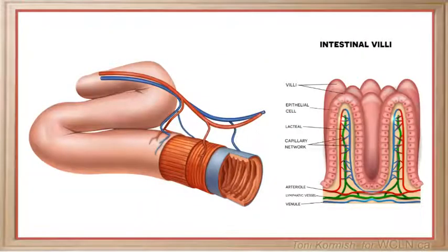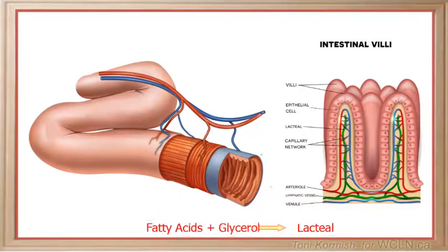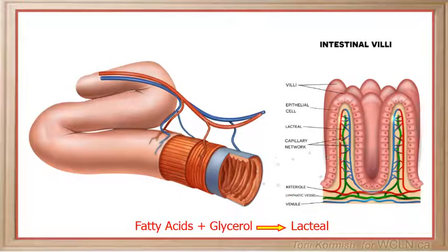The fatty acids and glycerol molecules are small enough to be absorbed into the lacteals of the microvilli that line the walls of the small intestine. The lacteals are part of the lymphatic system, and the products of lipid digestion will be transported through the lymphatic system and eventually enter the bloodstream at the subclavian vein.